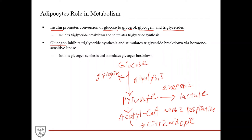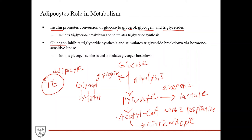From a triglyceride standpoint, the adipocyte stores triglycerides, which consist of glycerol and three fatty acids. Acetyl-CoA can also be used to synthesize fatty acids, and fatty acids can be combined with glycerol to form triglycerides, which are stored in the adipocyte. During fasting, triglycerides are broken down into free fatty acids, which are then converted back into acetyl-CoA, enter the citric acid cycle, provide electron carriers to the electron transport chain, and generate a lot of ATP in the fasting state.